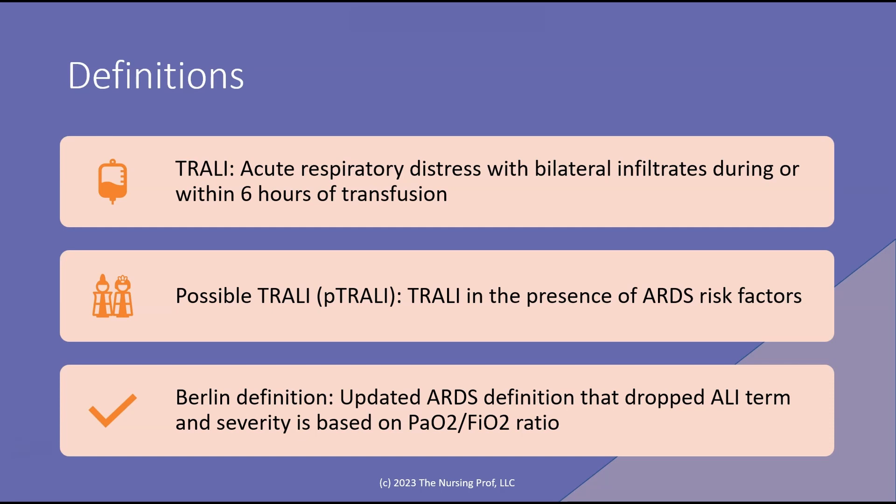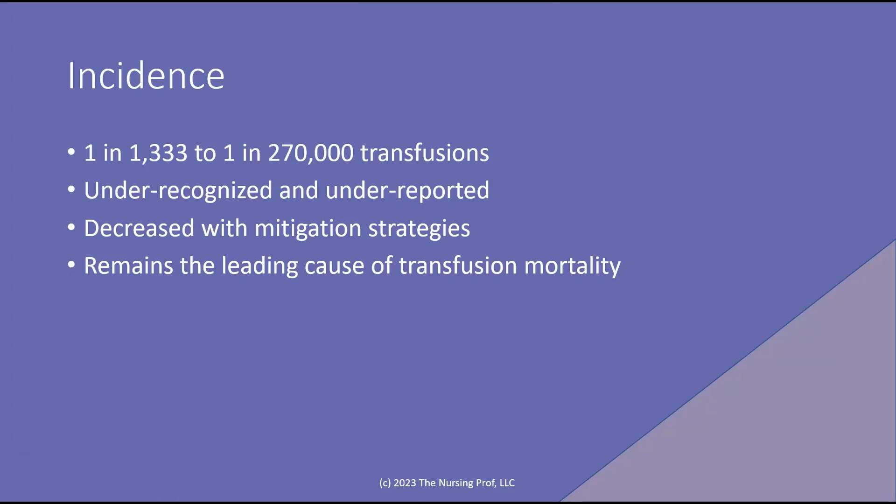The Berlin definition is a definition of ARDS where some terms have been dropped, including the term ALI — acute lung injury. Severity is now based upon the PO2-FIO2 ratio, which is simply the PO2 divided by the FIO2. This should be greater than 300. If it's not, that can indicate that we have acute lung injury.